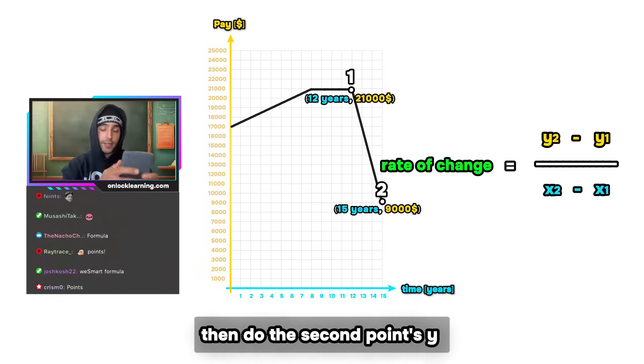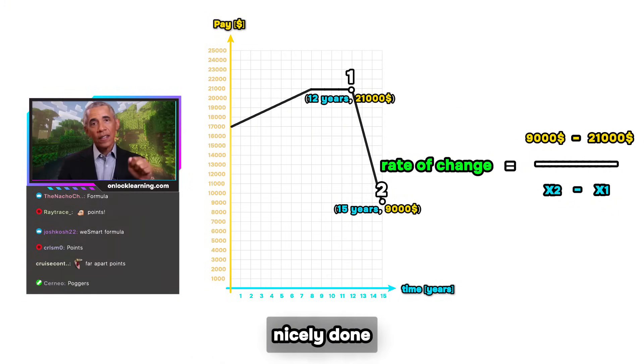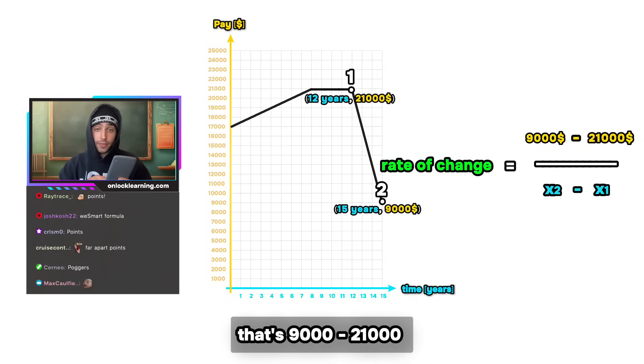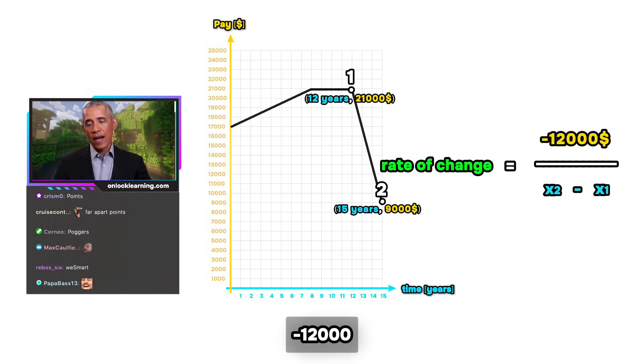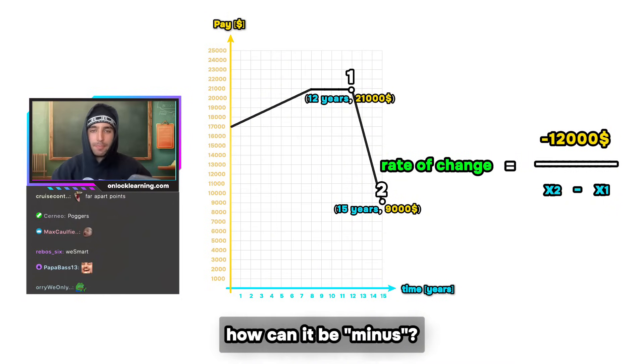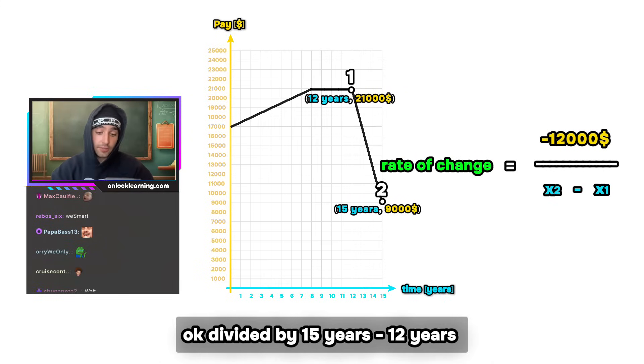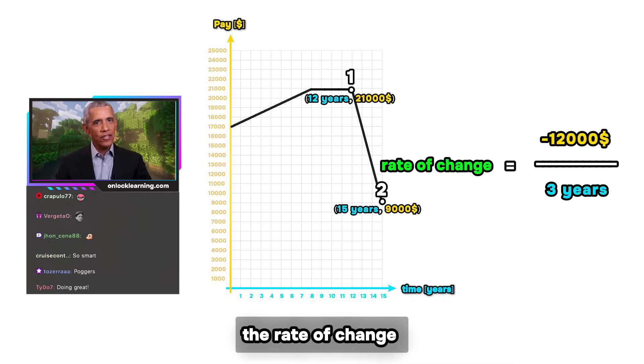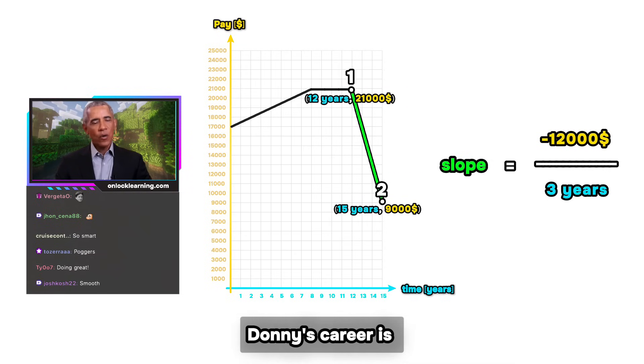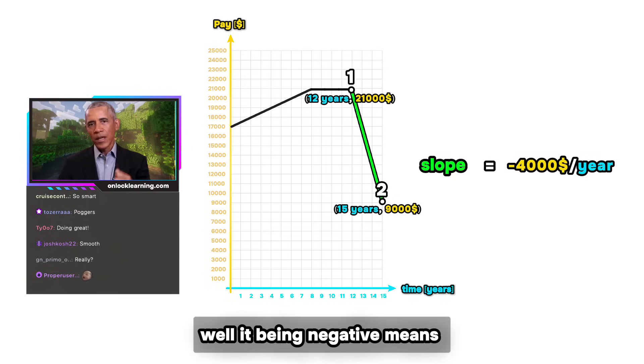Then do the second point's y minus the first point's y. Nicely done. That's 9,000 minus 21,000, which is minus 12,000. Wait, what? How can it be minus? Keep cooking, we'll explain in a second. Okay, so divided by 15 years minus 12 years, so three years, right. So the rate of change or slope during the death of Donnie's career is negative four thousand dollars per year. So why is it negative?